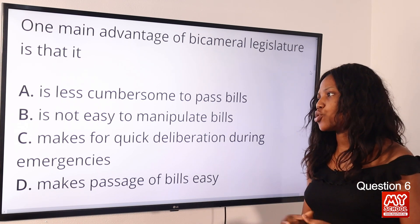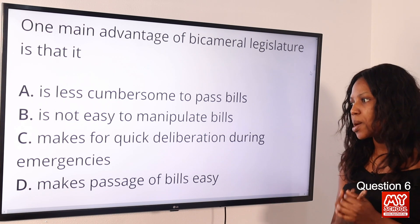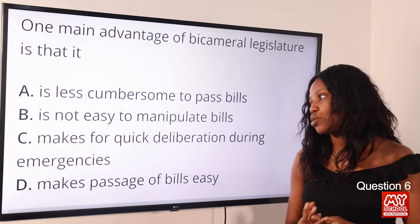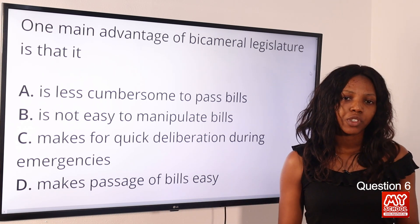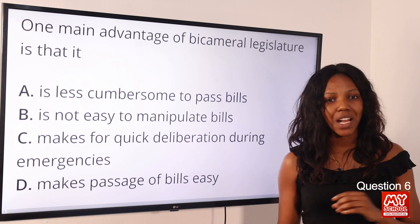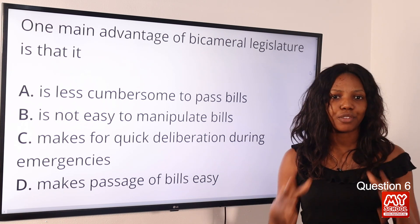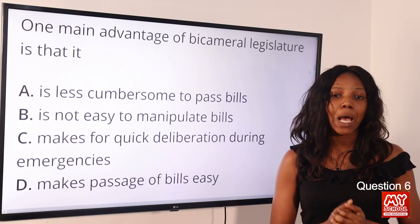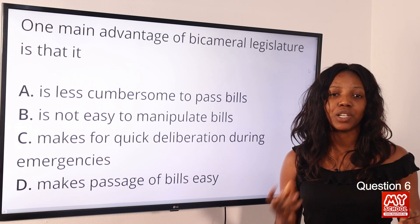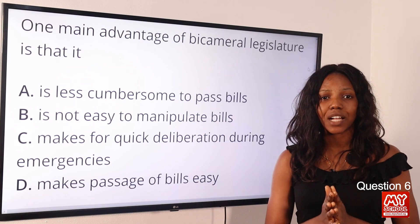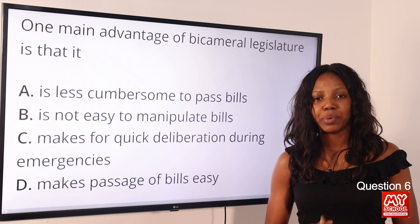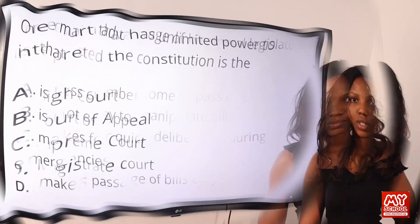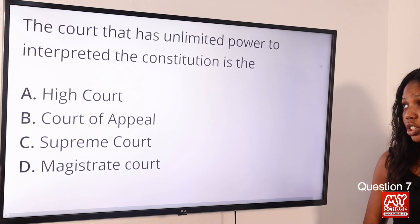Question 6: One big advantage of bicameral legislature is — option A: it is less cumbersome to pass bills; option B: it is not easy to manipulate bills; option C: it makes for quick deliberation during emergencies; option D: it makes passage of bills easy. The answer is option B. A bicameral legislature has two chambers, allowing for thoroughness — a bill is examined and debated by both houses, making it hard to manipulate before it becomes law.